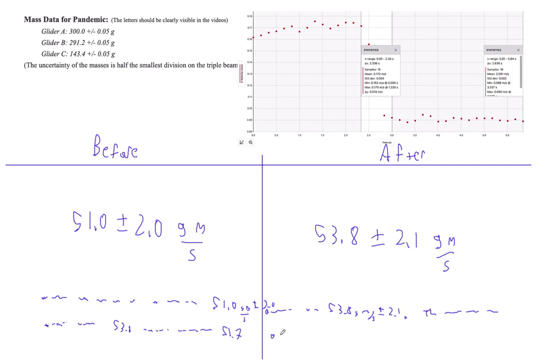And the momentum before of 51.0 could have been as high as, well, 2 plus 51 is 53.0. So therefore, they could have been the same. There we go.